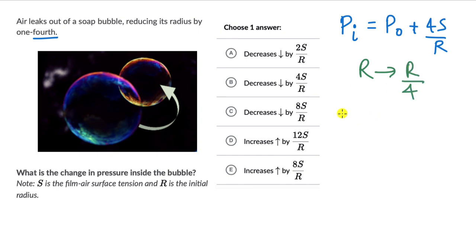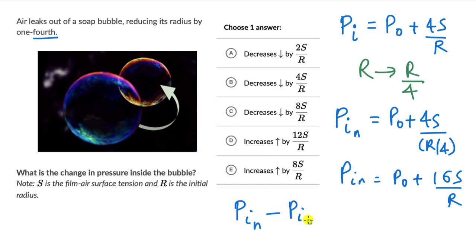then that is given by, that becomes P N. Let's write N for new. This is P zero plus 4S divided by R by four. It's R by four. This four goes to the top and this becomes P naught plus 16S by R. Now we can clearly see that it really increases and by how much we can use P I new minus P I old. So this will be,